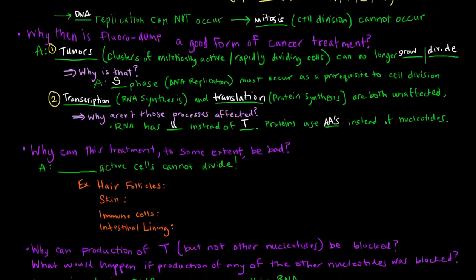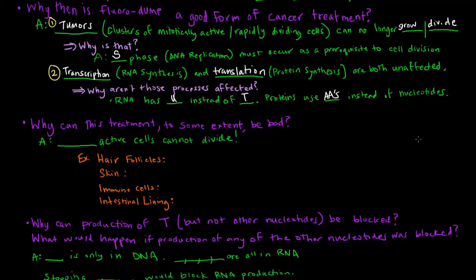Now there are some side effects of this cancer treatment. Basically, any mitotically active cells cannot divide — this drug stops mitosis from occurring because it stops DNA replication. Examples of cells that are mitotically active include hair follicles, skin cells, immune cells, and the intestinal lining.